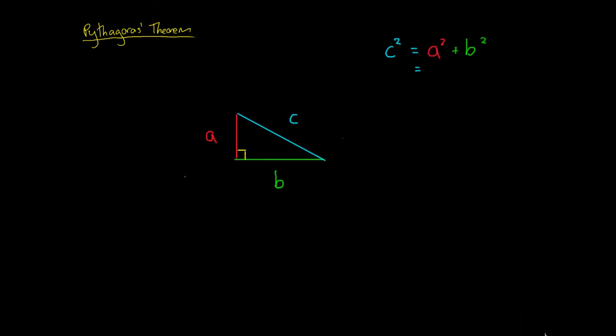So Pythagoras Theorem says that C multiplied by C, and these dots just mean multiplied by, equals A multiplied by A plus B multiplied by B, and this is just in lengths.